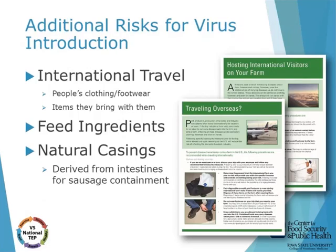A few additional risks for virus introduction include international travel — the people themselves along with products they bring into the country, either naively or intentionally. We have resources available for farms hosting international visitors and for individuals that travel overseas, including precautions to take. It may be best to avoid hosting international visitors who have been on farms in ASF-infected countries. A lot of research is being done on feed ingredients to determine the risk from countries with ASF. Additionally, the risk of casings being a source of infection has been discussed. The OIE sets guidelines for trade with ASF-positive countries.